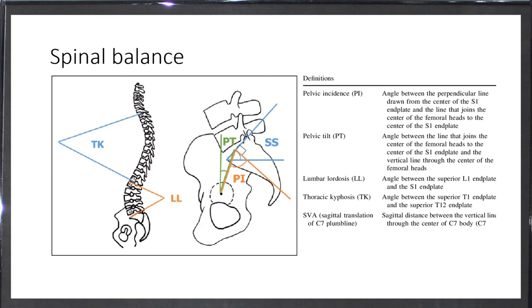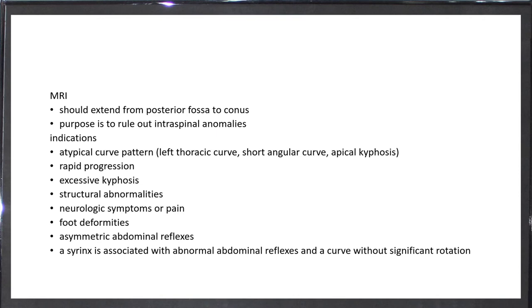What are the indications of MRI? You don't need MRI for everyone. You need it if there is atypical curve pattern for fear that there is some significant neurological abnormality, rapid progression, excessive kyphosis, structural abnormalities in other parts of the body, foot deformities, asymmetric abdominal reflexes for fear of syringomyelia. These are the indications of MRI, and it should extend from the posterior fossa to the conus.